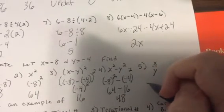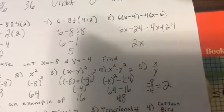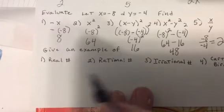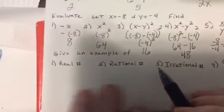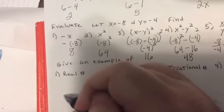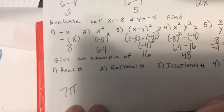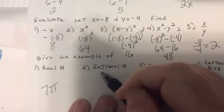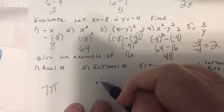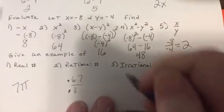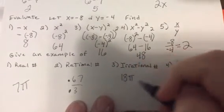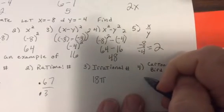One little category to go: give an example of a real number, rational number, irrational number, and a cartoon bird. Real number is any number. Rational number is any number that could be written as a fraction, so 0.67, rational. 0.3 forever, rational. Irrational: pi.